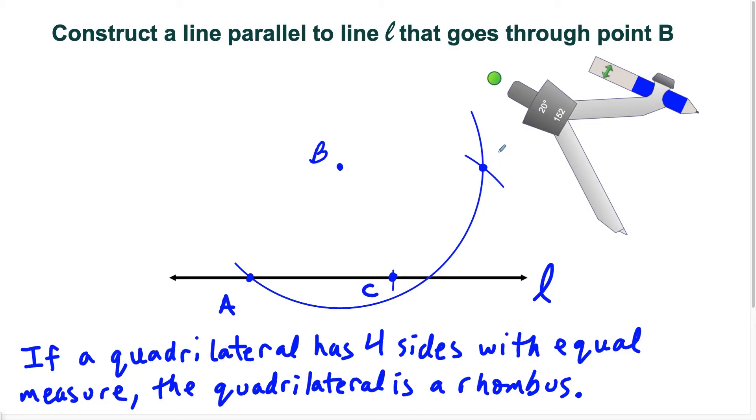So now ABCD, if I connect all these four points, would make a rhombus. But the only points I really need to connect here are points B and D, because that's going to form the straight line that's going to be parallel to line L.